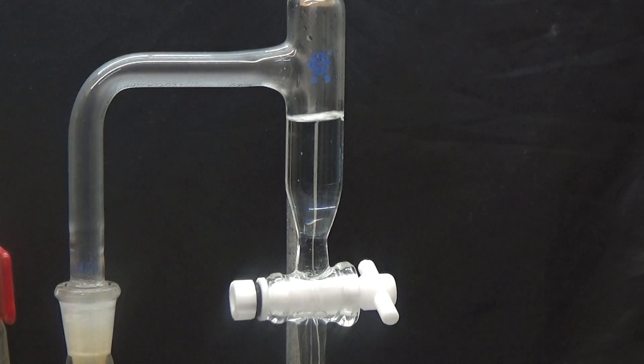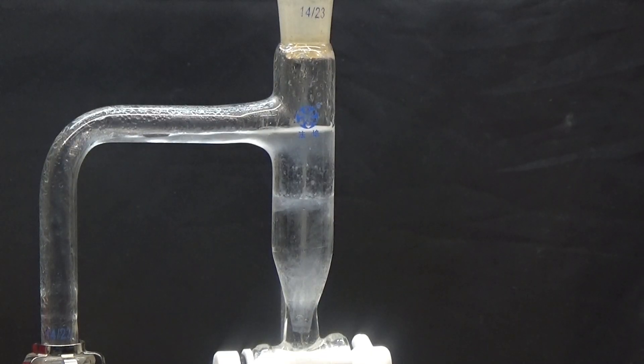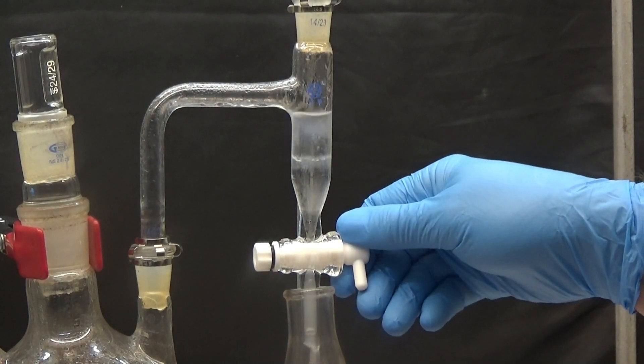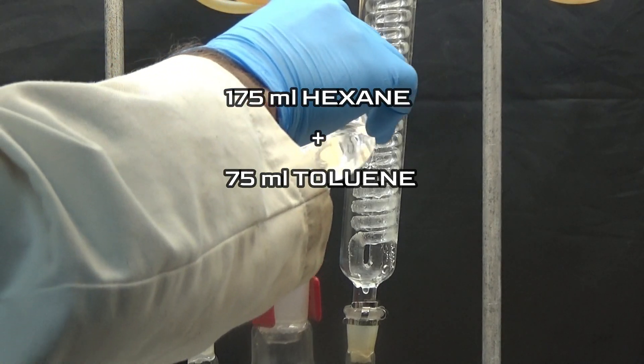We set up a Dean-Stark and removed all the water by distilling the toluene. Once the water has been removed, let it cool and then add 175ml of hexane mixed with 75ml of toluene.